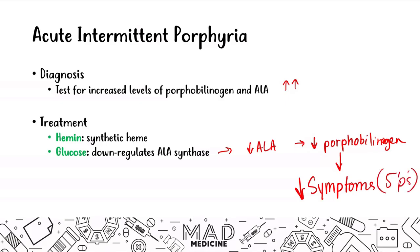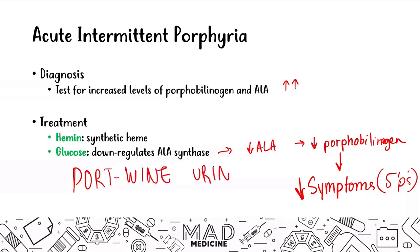To recap: acute intermittent porphyria occurs due to a partial, autosomal dominant deficiency in porphobilinogen deaminase, leading to an increase in ALA and porphobilinogen. Patients present with the five P's — mostly non-specific symptoms precipitated by drugs, alcohol, and starvation — except for port wine colored urine, which is the key buzzword for Step 1. You test by checking levels of porphobilinogen and ALA, and treat with hemin and glucose to down-regulate ALA synthase.